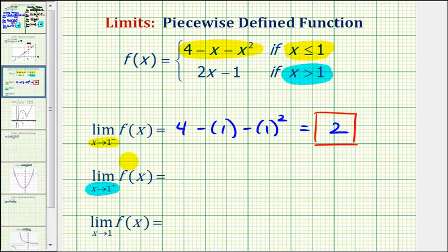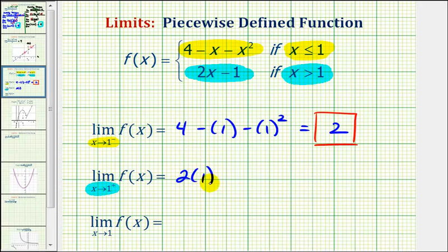So we can determine this one-sided limit by performing direct substitution into the function rule f of x equals two x minus one. Substituting one for x, we would have two times one minus one. Well, two minus one is equal to one. So the limit as x approaches one from the right of f of x is equal to positive one.